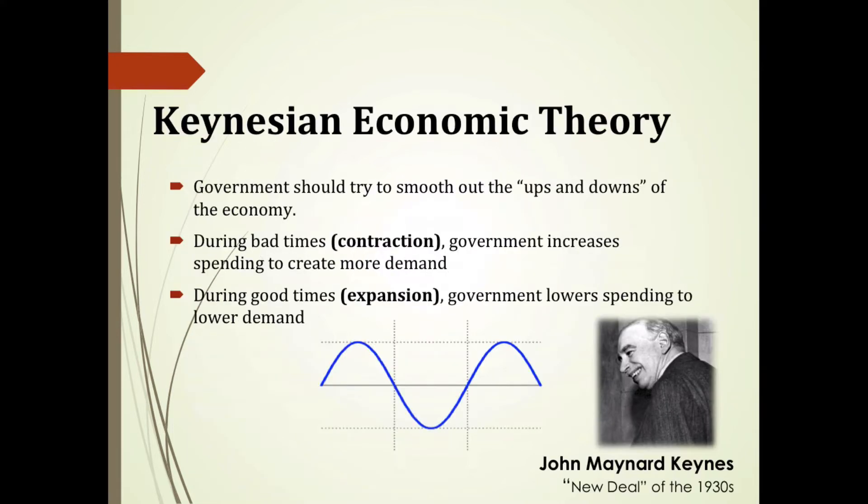The opposite of classical economic theory is called Keynesian economic theory, named after John Maynard Keynes, whose claim to fame came in the 1930s with many of the New Deal policies that helped pull our country out of the Great Depression. According to Keynes, the government should take a more active role in the economy when necessary and try to smooth out the ups and downs. This theory moves our focus away from the free market system toward a command economy, where the government plays a much larger role.